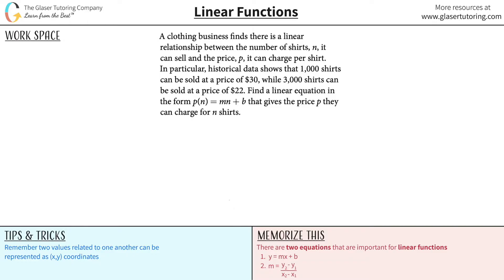A clothing business finds there is a linear relationship between the number of shirts it can sell and the price p it can charge per shirt. In particular, historical data shows that 1,000 shirts can be sold at a price of $30 per shirt, while 3,000 shirts can be sold at a price of $22 per shirt. Find a linear equation in the form of... Okay, so basically what we have here is they're telling us that there's a linear relationship between the number of shirts and the price.